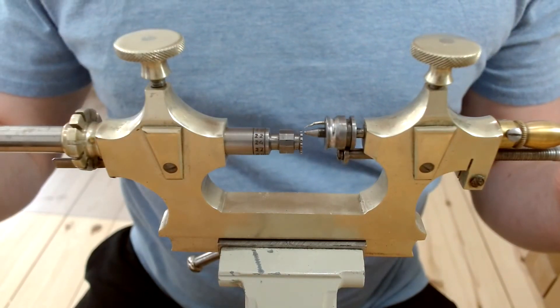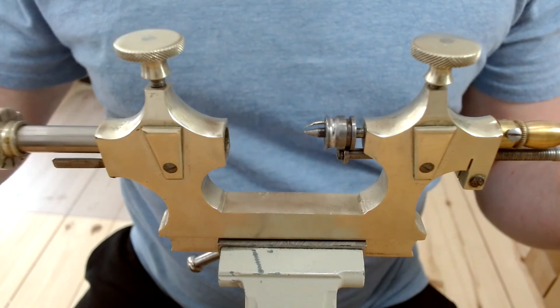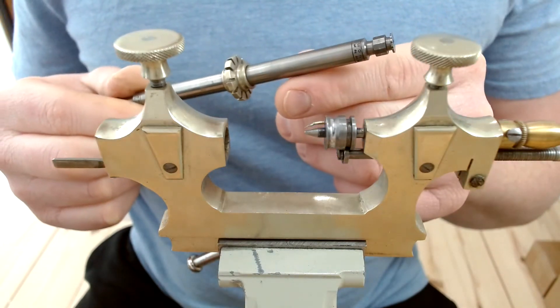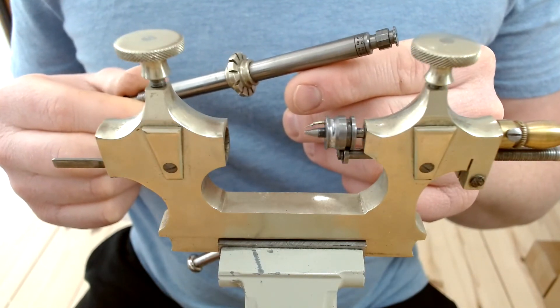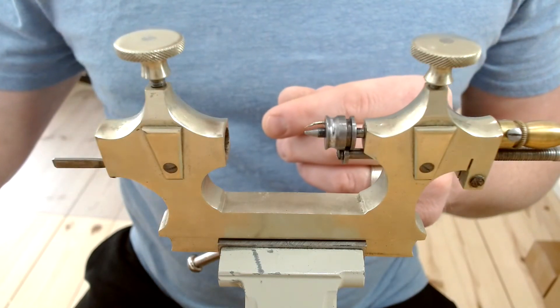We have our drum end which takes the pivot. This moves back and forth so we can adjust exactly where the pivot of the wheel sits. This drum here has various different sizes that can be used depending on the size of the train wheel pivot and the size that we need to get it to.